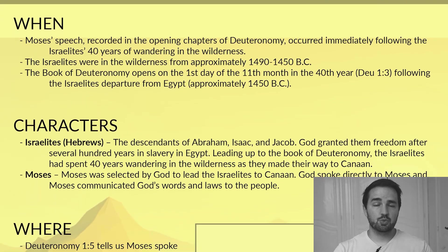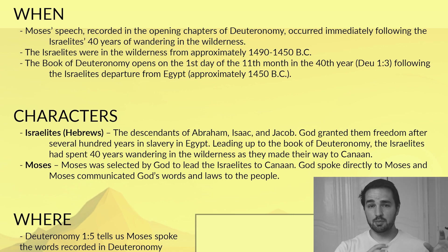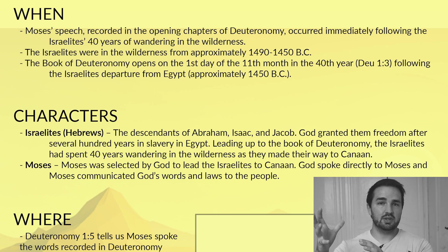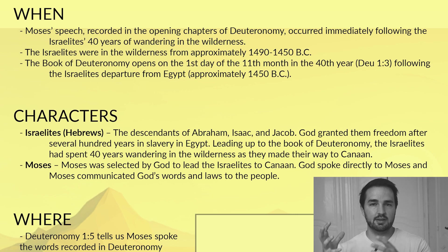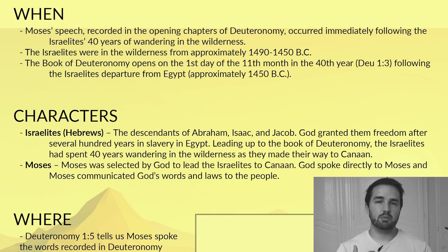In terms of our characters, we've got those Israelites, also known as the Hebrews. They for a long time were slaves in Egypt, but God gave them freedom — you remember the 10 plagues? Now they've come to the land of Canaan, and that was called the promised land because God had promised that land to the forefathers of the Israelites: Abraham, Isaac, and Jacob.